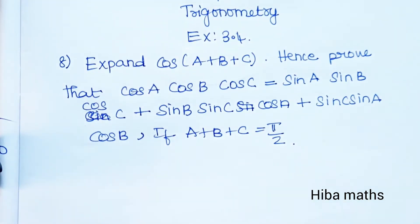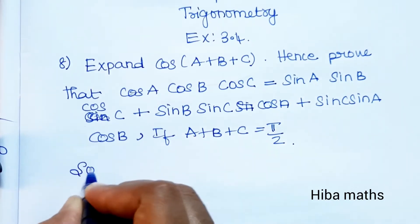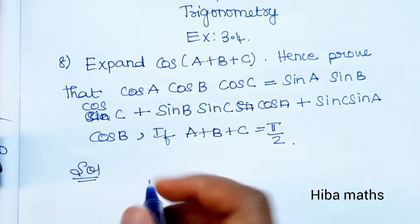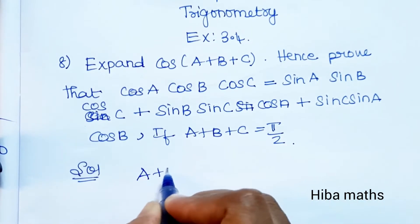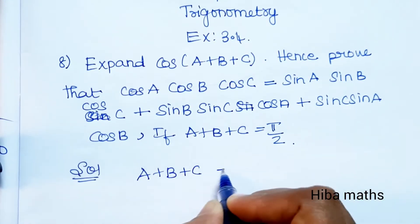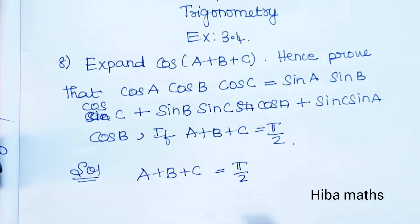In solution, first given condition A+B+C is equal to π/2. Now we have to apply cos to both sides and we have to solve. Cos(A+B+C) is equal to cos(π/2).